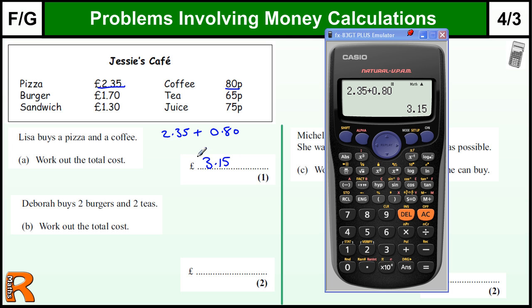Okay, Deborah buys two burgers and two teas. So two burgers - we've got two lots of £1.70 which is £3.40. Again we can do that in the calculator.